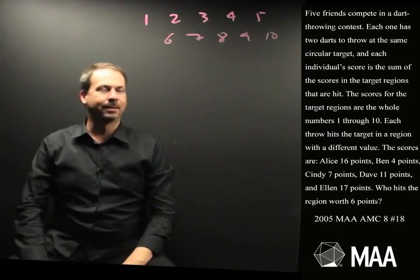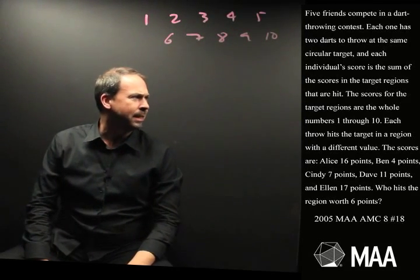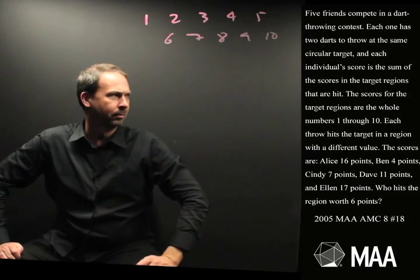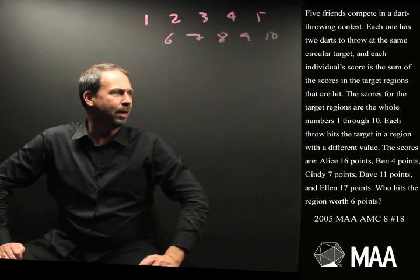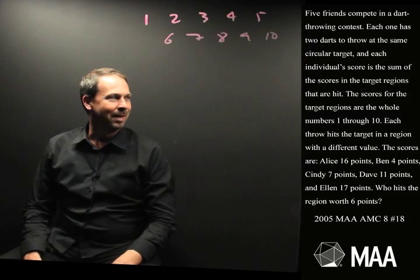The scores are, oh here goes, this is a long question. Alice gets 16 points, Ben 4 points, Cindy gets 7 points, Dave gets 11 points, and Ellen gets 17 points. Who hits the region worth 6 points? Uh oh. Wow.